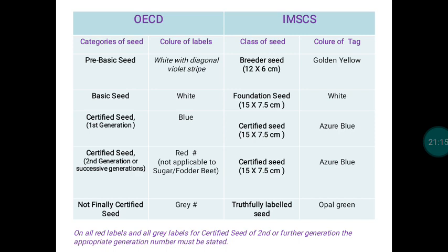Under OECD, Certified Seed First Generation (C1) has a blue label, equivalent to our Certified Seed in IMSCS with a tag dimension of 15×7.5 cm in azure blue color. Certified Seed Second Generation (C2) has a red label. If going for further multiplication, the subsequent generation must be mentioned. This is not applicable for sugar beet and winter wheat — only certified seed stage is permitted for those crops, with no further generations allowed. In our system, these are CS1 and CS2 respectively.